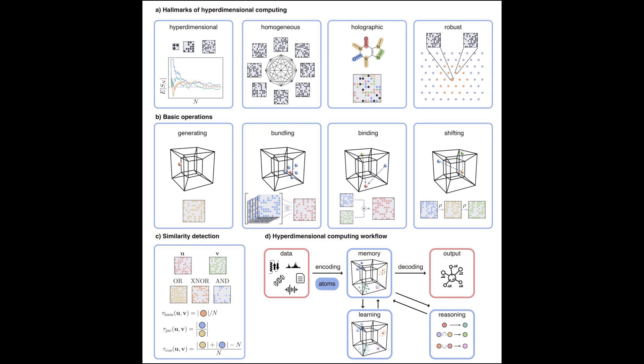Two key operations are binding and bundling. Binding allows you to associate or link two vectors together, while bundling enables you to combine multiple vectors into a single composite representation.